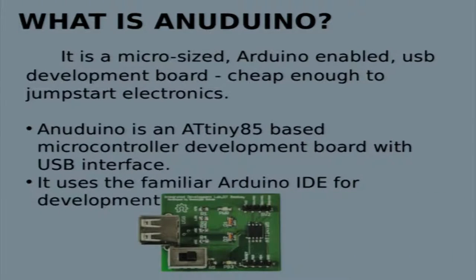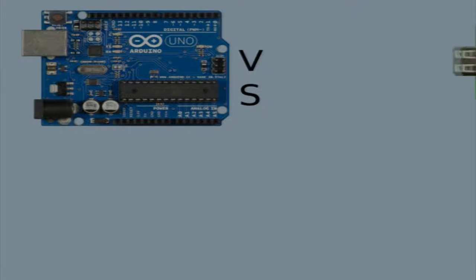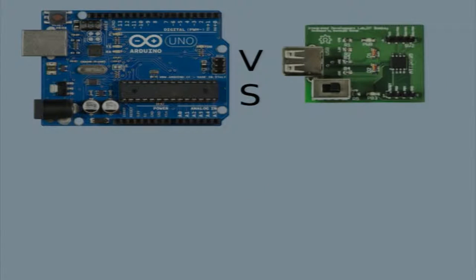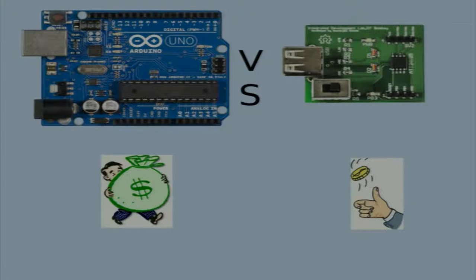Now we will see the differences between Arduino and Anudino. First and foremost, the most important point is the cost. Arduino costs around 1500 rupees, while Anudino has been developed at less than 100 rupees — around 80 rupees.